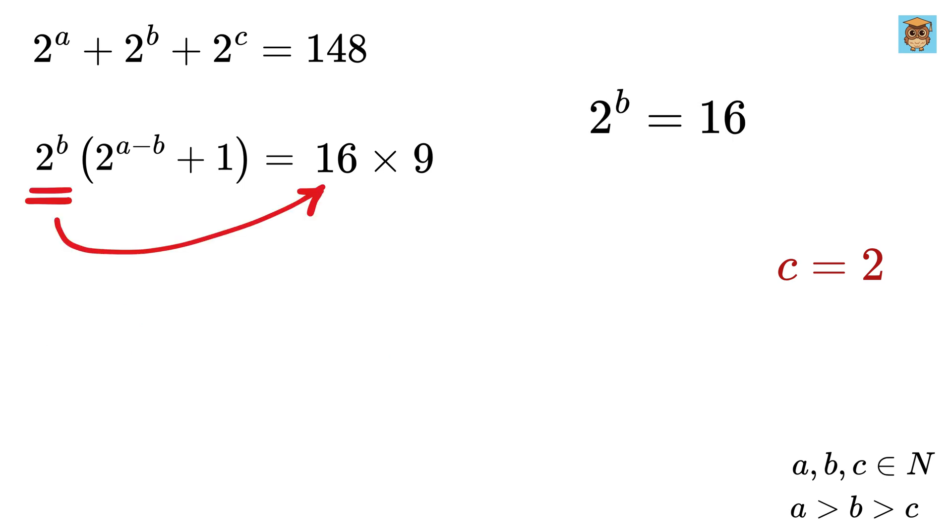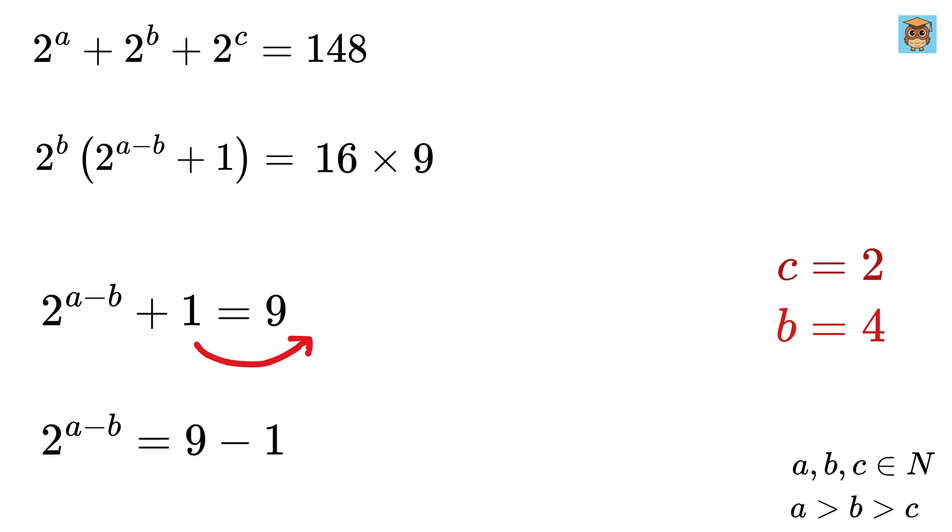So, 2 to the B will be 16, which can be written as 2 to the 4, and thus B equals 4. Then 2 to the A minus B plus 1 equals 9. Take one this side to get 2 to the A minus B equals 9 minus 1 or 8.